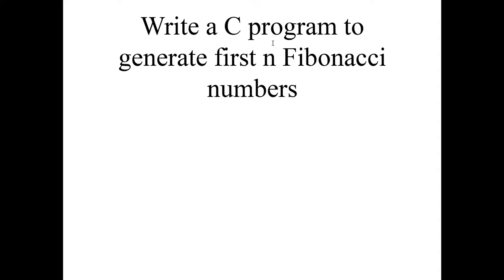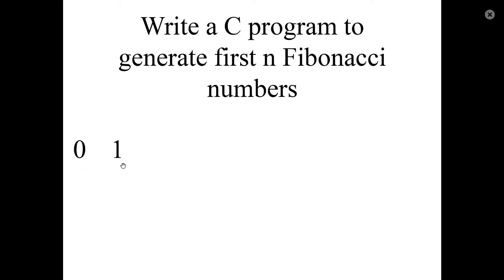Write a C program to generate the first N Fibonacci numbers. The first Fibonacci number is 0, the second is 1. The third one is the sum of the previous two, so it is equal to 0 plus 1, which equals 1.